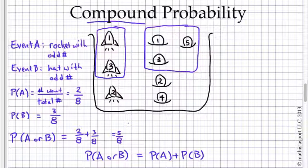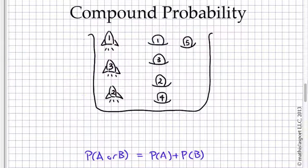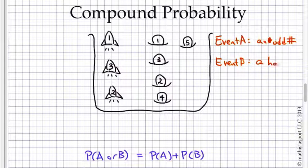But now we try a different pair of events, and I'll show you why that's not enough. So let's change this. And now let's make event A. How about if we make it the probability that I just pick something with an odd number? Doesn't have to be a rocket. Doesn't have to be a hat. Anything with an odd number. And we'll call event B that I just choose a hat, any old hat.